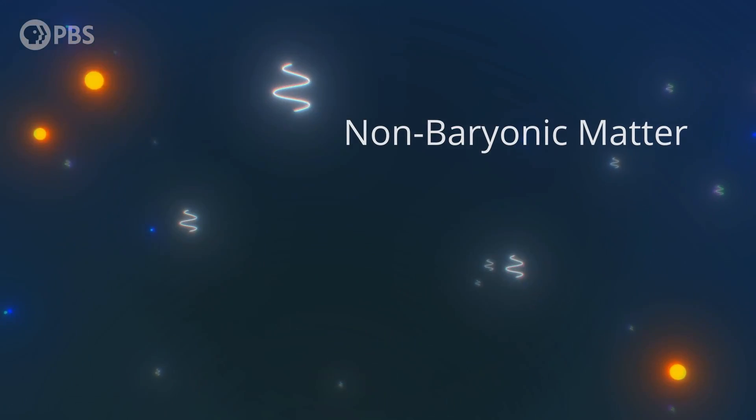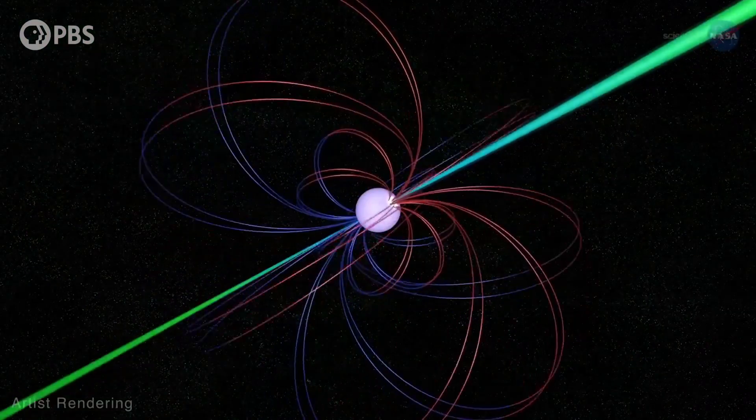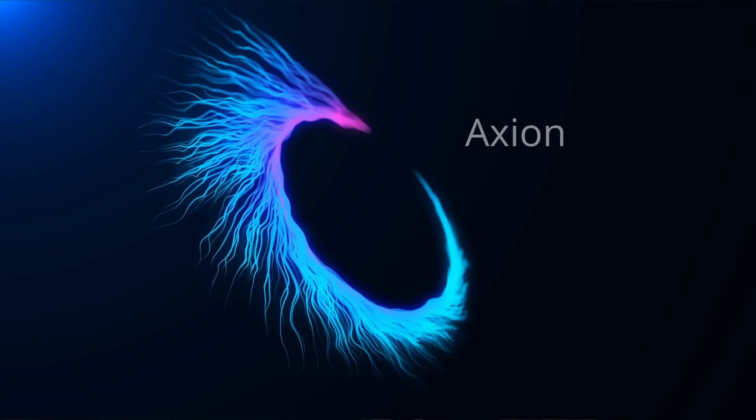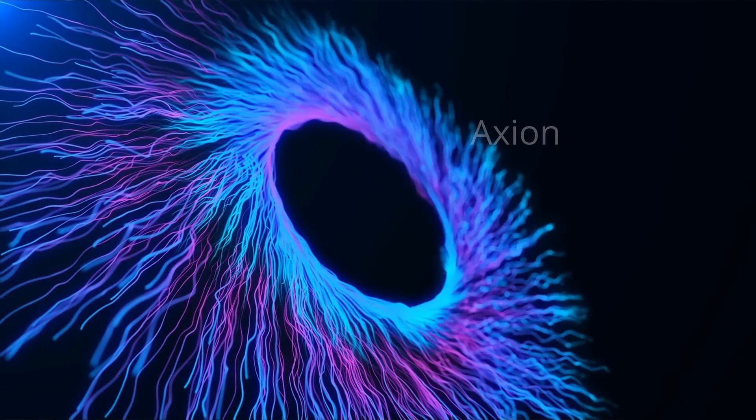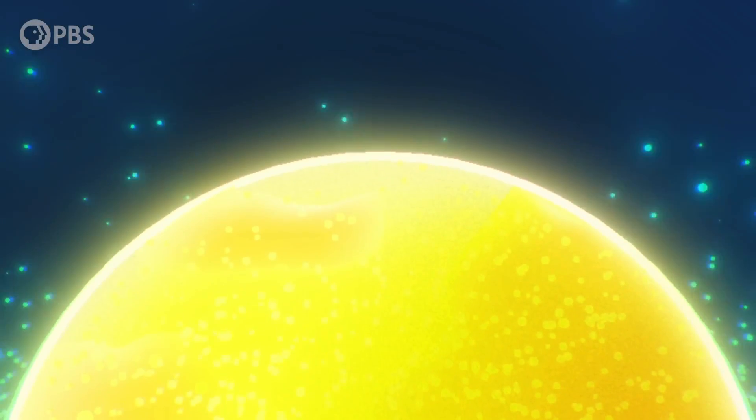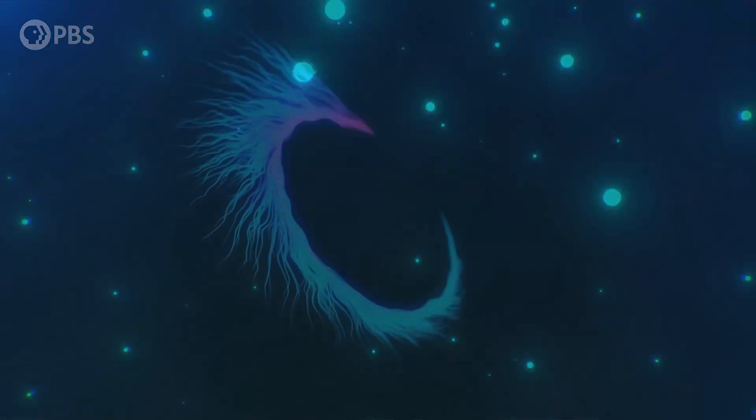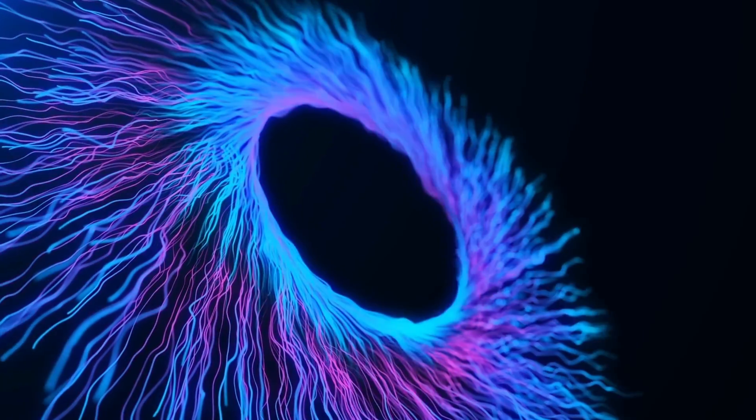This leads us to non-baryonic matter, which is where we enter a strange new world of undiscovered and theoretical particles. One such particle is the axion. Thought to be incredibly small in mass, only one millionth of an electron, this particle is unbelievably hard to study and detect. As yet, this particle is unproven, but would solve two mysteries in our universe if it exists.